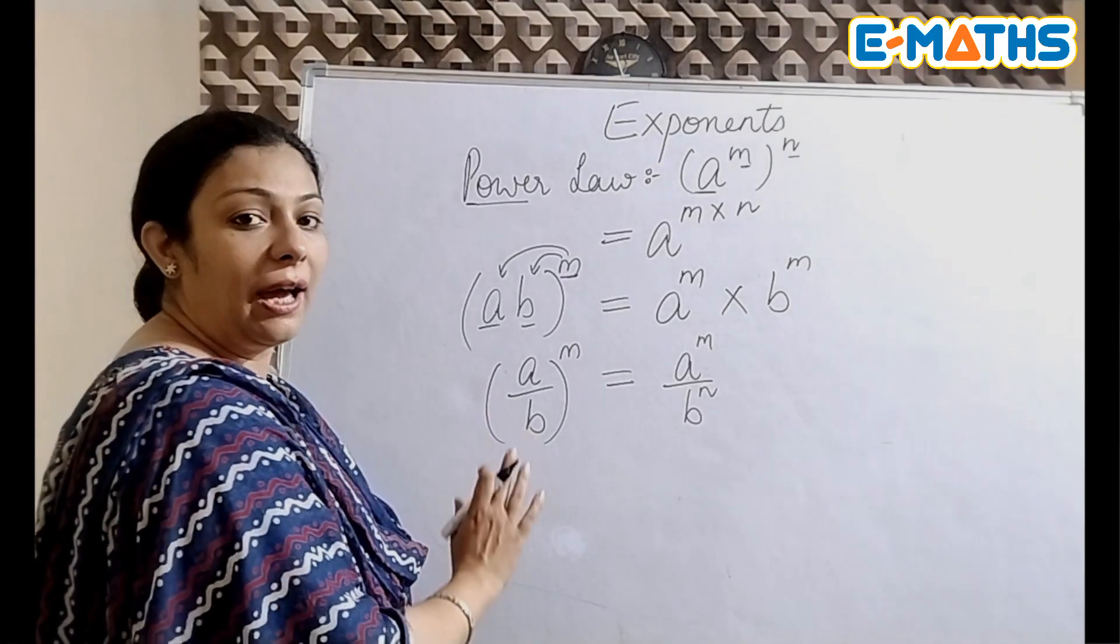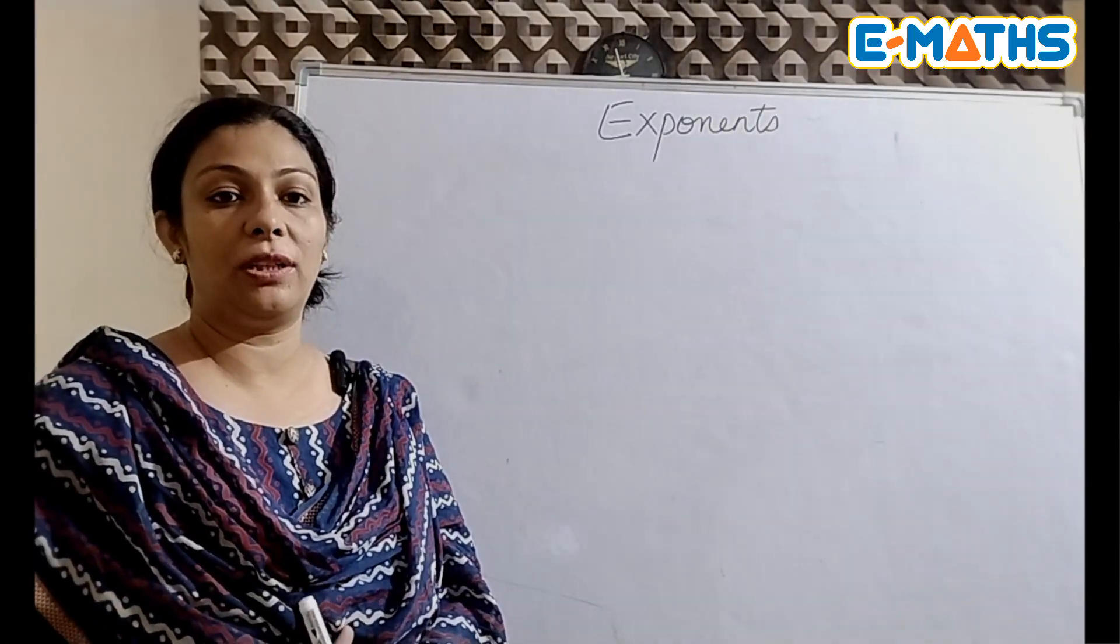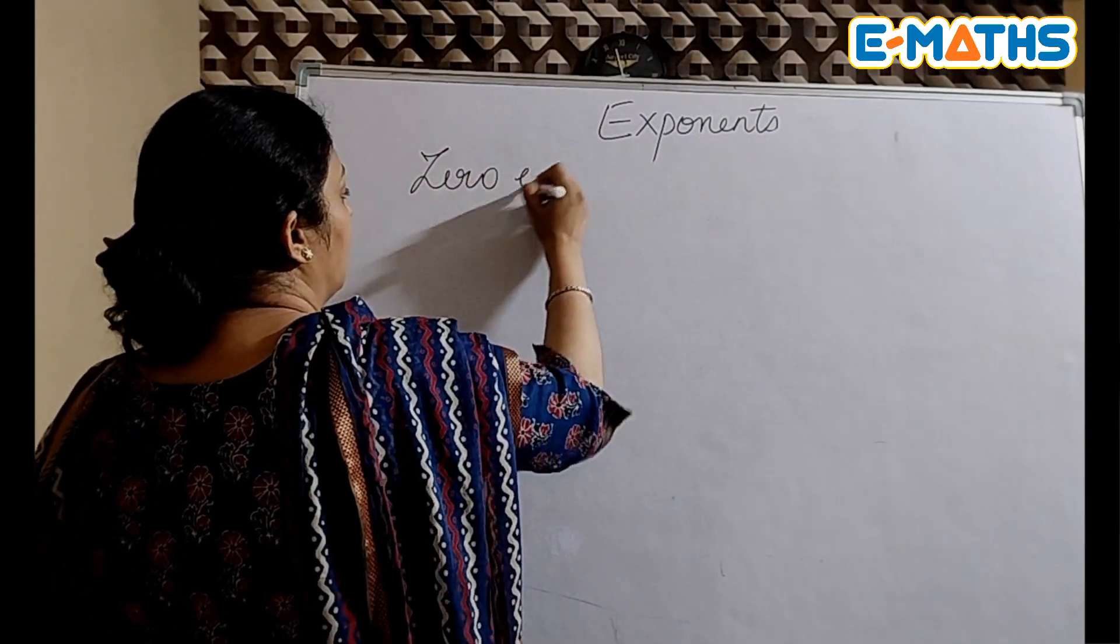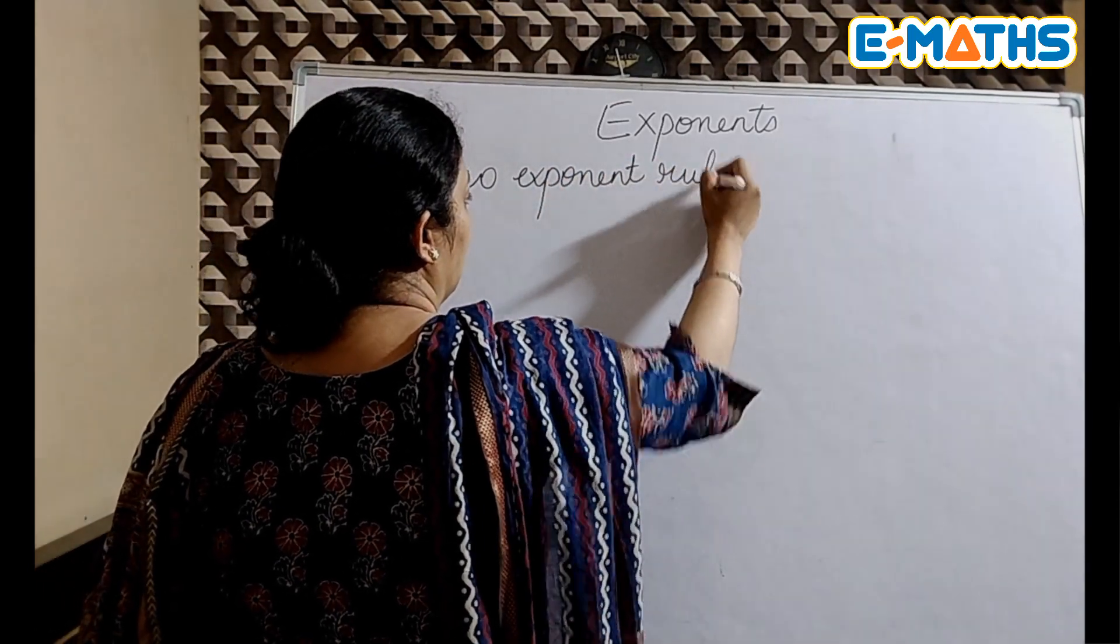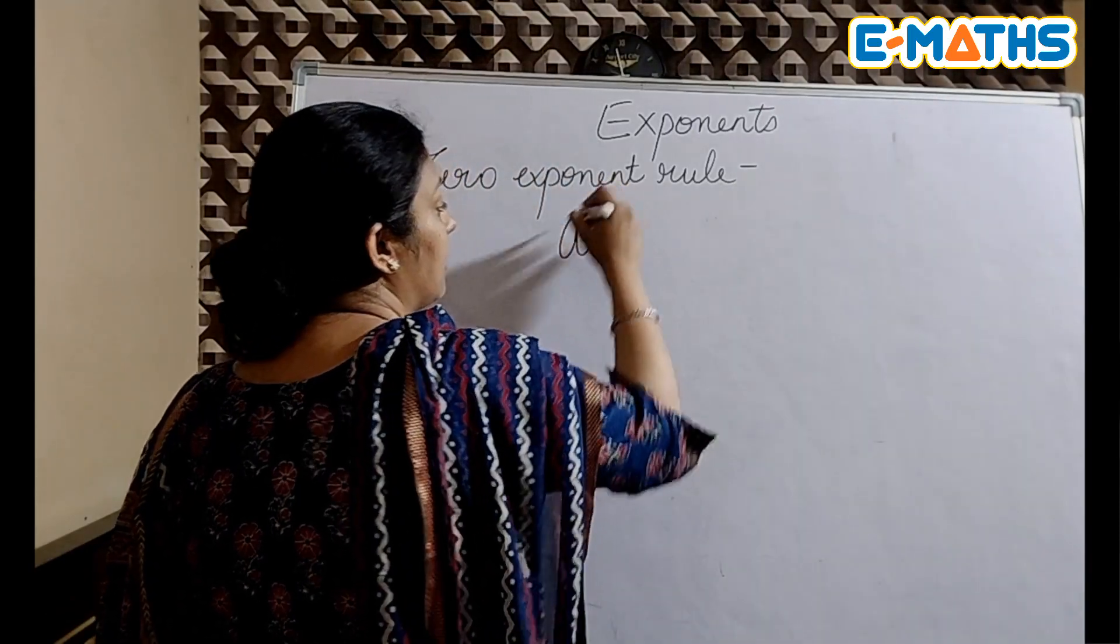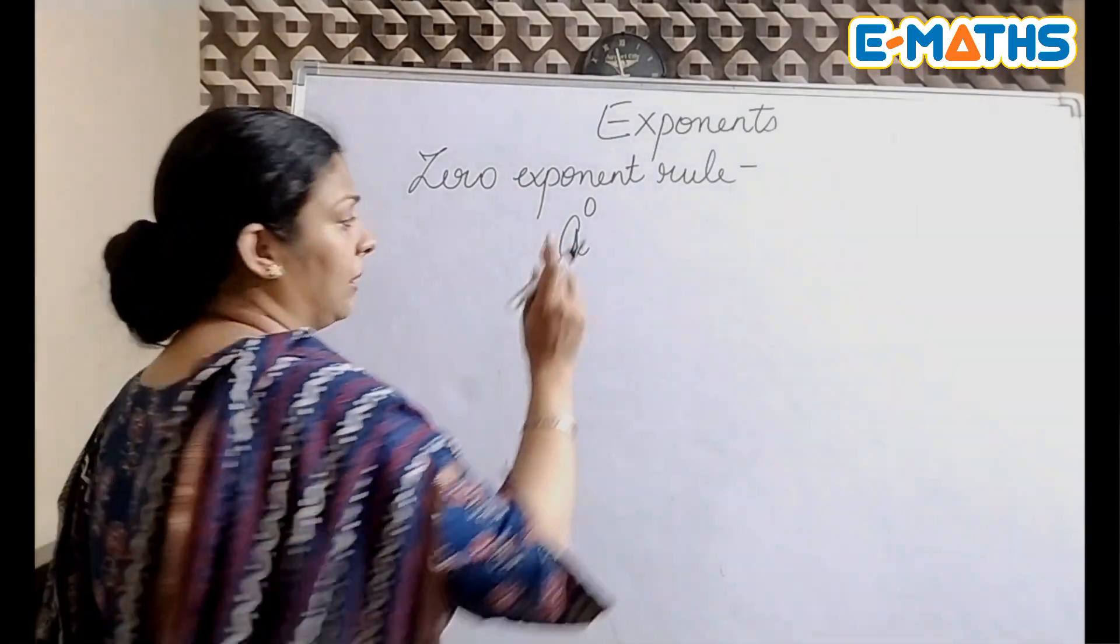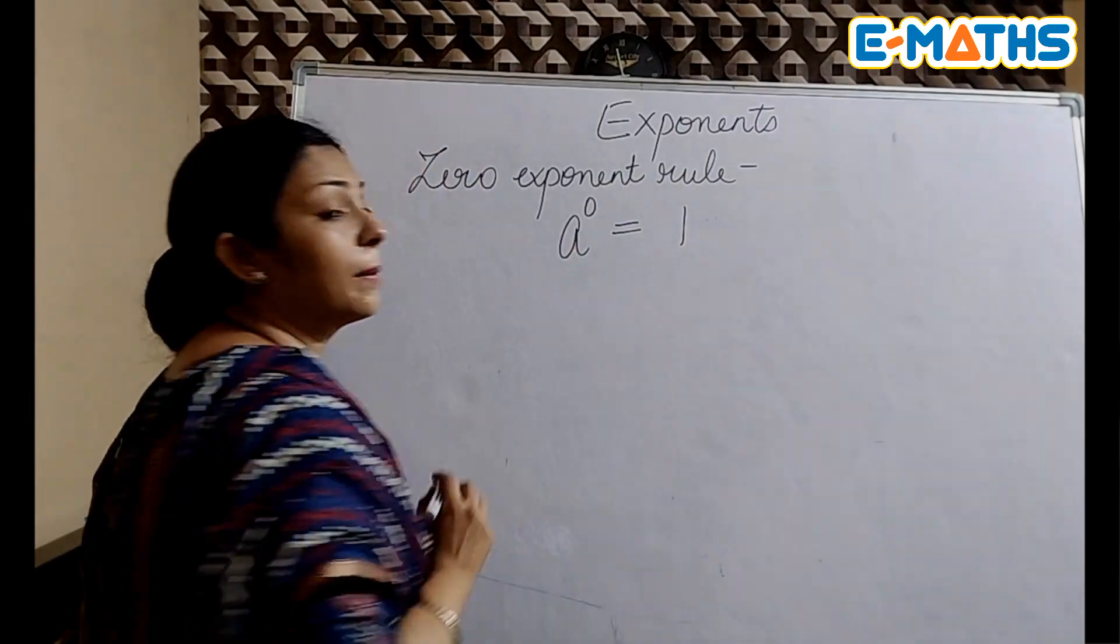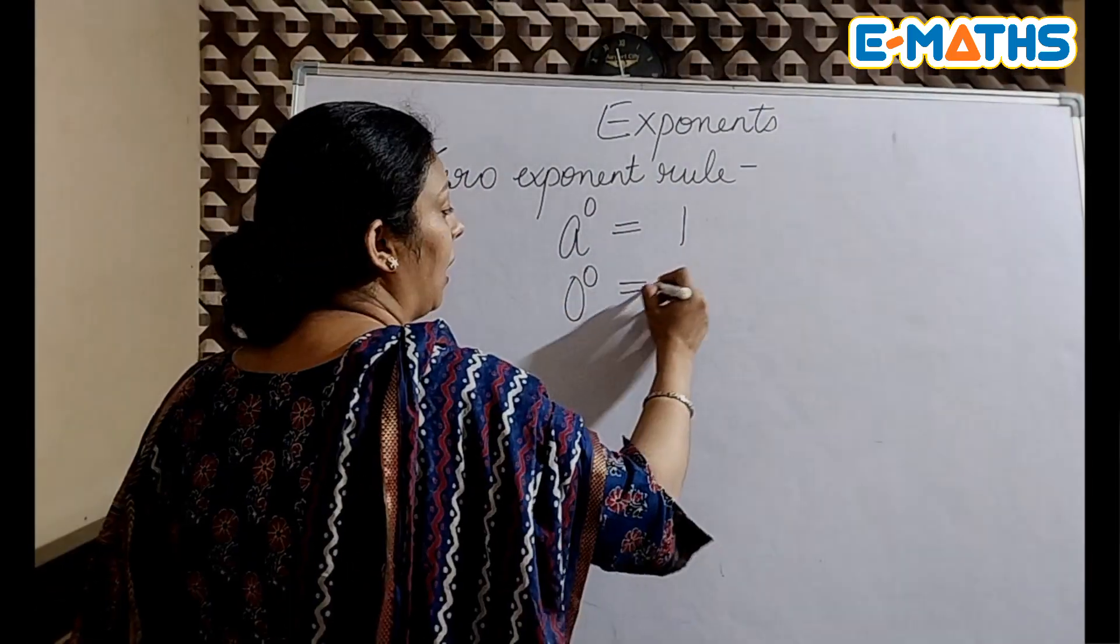When you will open up this bracket, what you will do is this power will be applicable on this as well and it will come on this as well. So that means a will also have this power m and b will also have this power m.